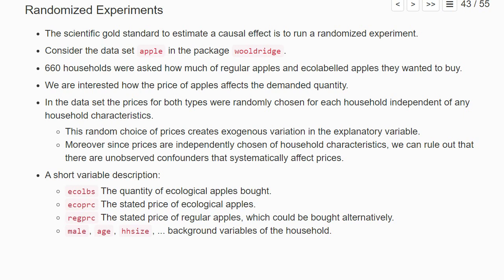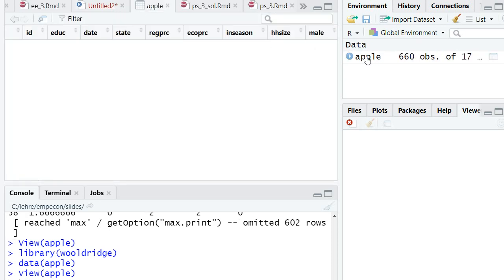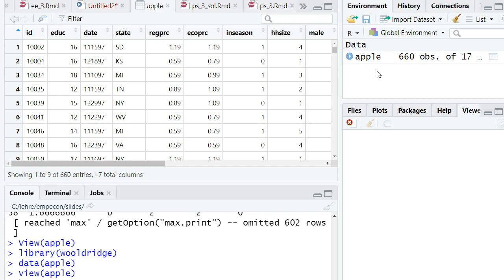Let's take a look at the R code. We load the library and can load the dataset with the command data(apple). I click on it, and we see it's 660 observations—these are the households.